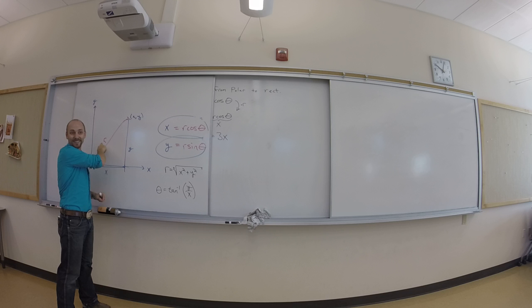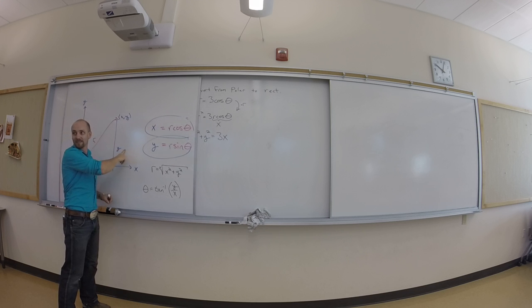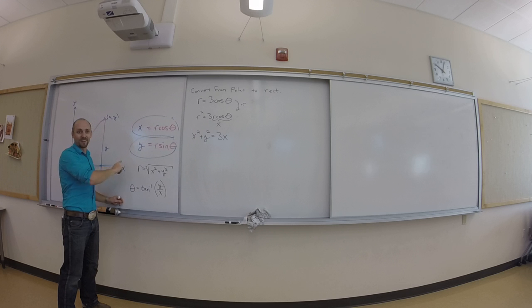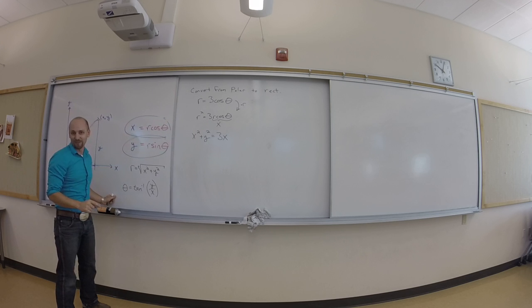So r squared is x squared plus y squared. Cool? That's subtle. It's weird to use the Pythagorean theorem backwards, right?